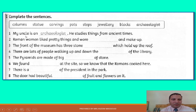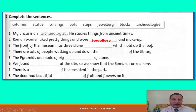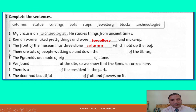Number one: my uncle is an archaeologist — he studies things from ancient times. Number two: Roman women liked pretty things and wore dash and makeup — the word 'wore' is past tense of 'wear', so the answer is jewelry. Number three: the front of the museum has three stone dash which hold up the roof — so the answer is columns.